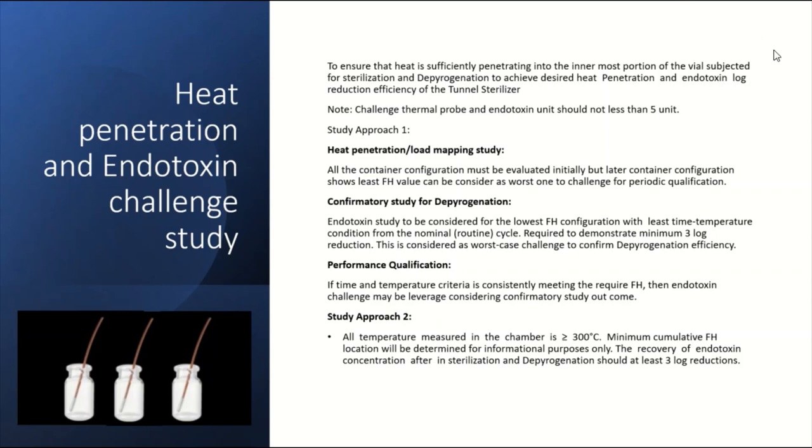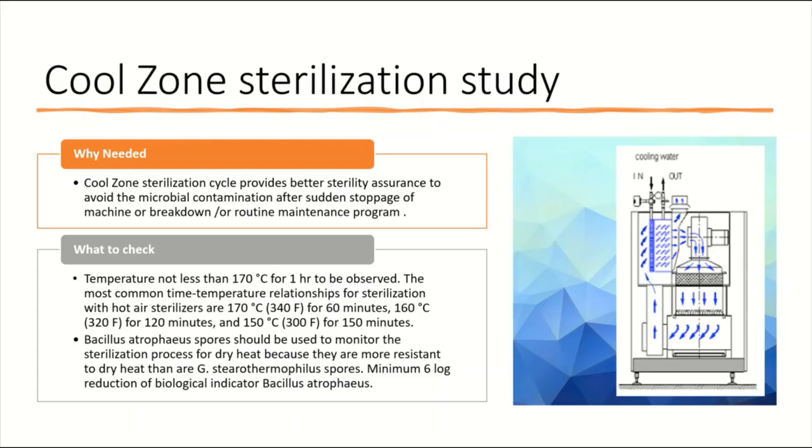To summarize once again, approach one is talking about mapping all the containers, getting the containers with the least Fh value, performing depyrogenation challenge with that worst-case configuration, and then qualifying your configurations. If you achieve low Fh, then endotoxin challenge is not required. Approach two is pretty simple where we can do more than 300 degree temperature. The USP expectation is the set of temperature and time which will achieve your three log reduction is sufficient. There is lots of misconception—people talk about two or three minutes at a certain temperature as a requirement, but no, there is no time and temperature requirement. It is up to you to decide how much temperature and how much time is required to get at least three log or more than three log. At least three log is required to claim depyrogenation.